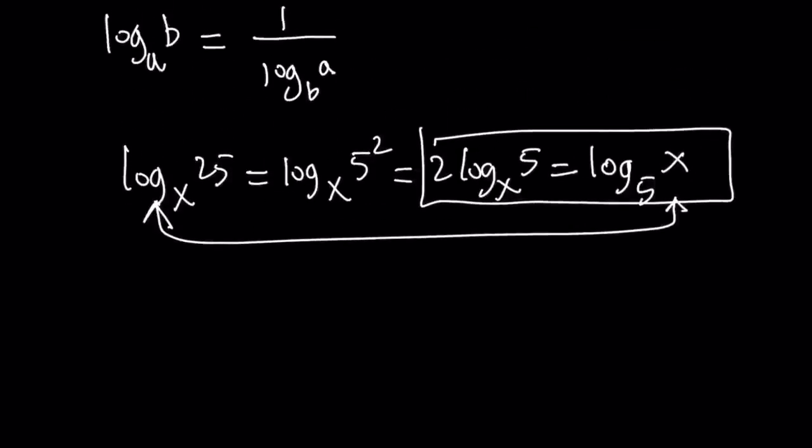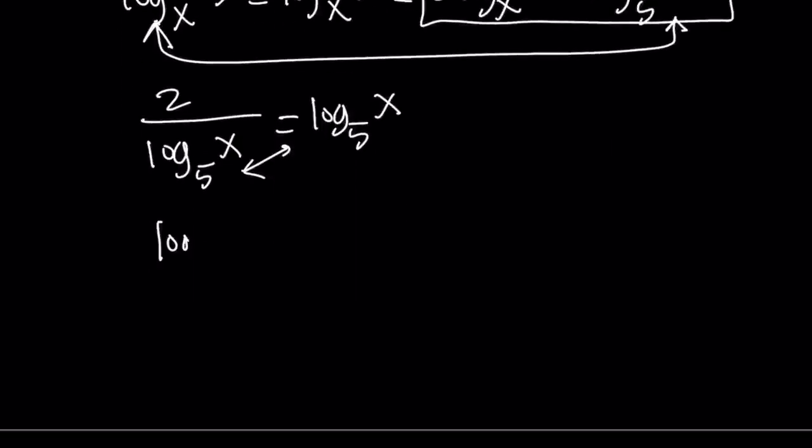Which one should we flip? I want to flip the first one. So, let's write it as 2 over log x with base 5. And that is equal to the same thing. Now, we can go ahead and cross multiply here. And that's going to give us a perfect square. Log x with base 5 squared equals 2. And this is going to give us two results.